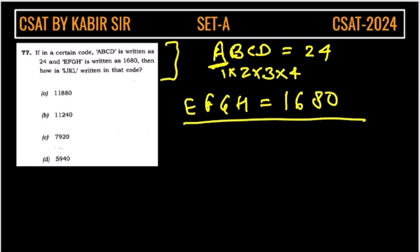Similarly, here this is EFGH. So the position is here 5, this is 6, this is 7 and this is 8. So what we are getting, we are getting 1680, this is 30, this is 56.